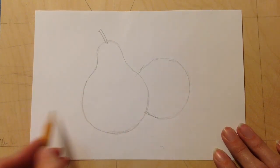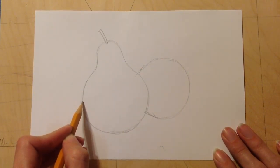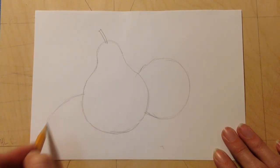My two pieces of fruit are sitting on a plate. So I'm going to go from the left side of my fruit here and make a curved line that comes down for one side of the plate.